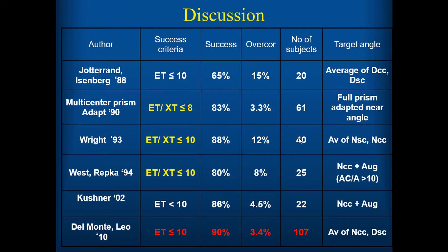Let's look at how this compares to the literature. These are studies using different augmentation techniques. We had the most stringent success criteria, the highest success rate, the lowest overcorrection rate, and the largest number of subjects. So I think time has proven that this technique works very well — and it's very simple to apply whether you're a general ophthalmologist or a pediatric ophthalmologist doing esotropia surgery.